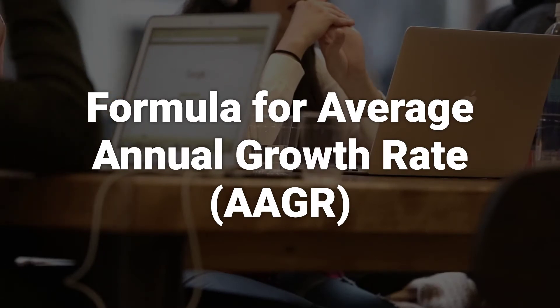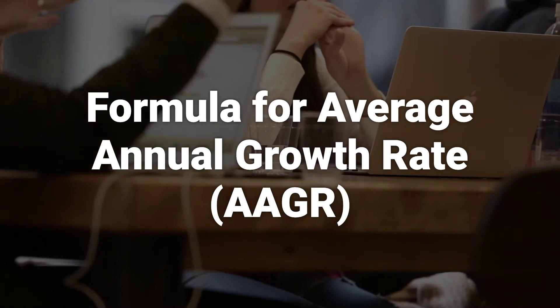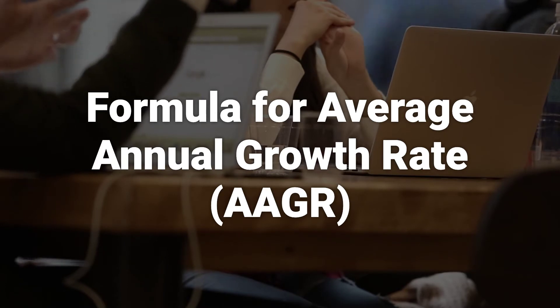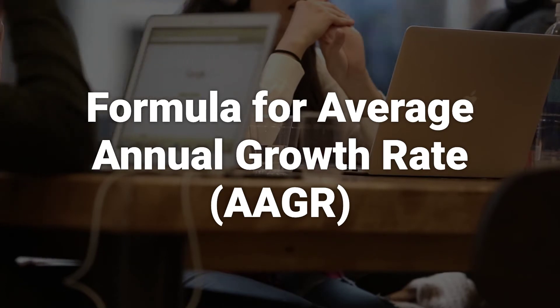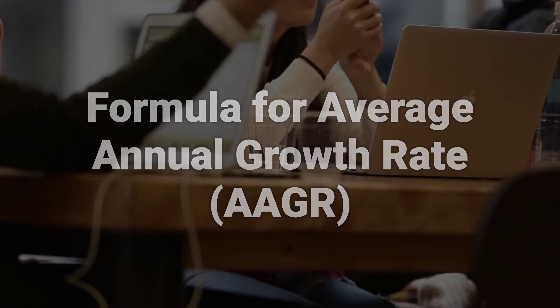The average annual growth rate is calculated as the simple arithmetic mean of a series of growth rates. It is the sum of each year's growth rate divided by the number of years.